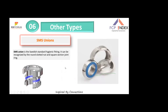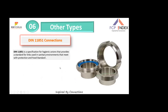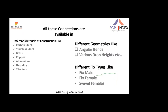SMS union is a Swedish standard hygienic fitting used in food and pharmaceutical industries. It is recognized by its round slotted nut and uses a square-section joint ring (gasket) for sealing between male and female parts. DIN 1185 connections are similar but use a 60-degree seat in the female instead of a flat, with a soft seat for sealing. DIN 1185 is also popular in the food industry.